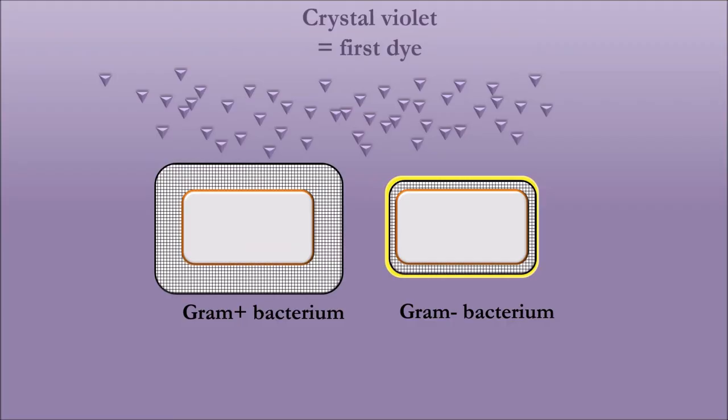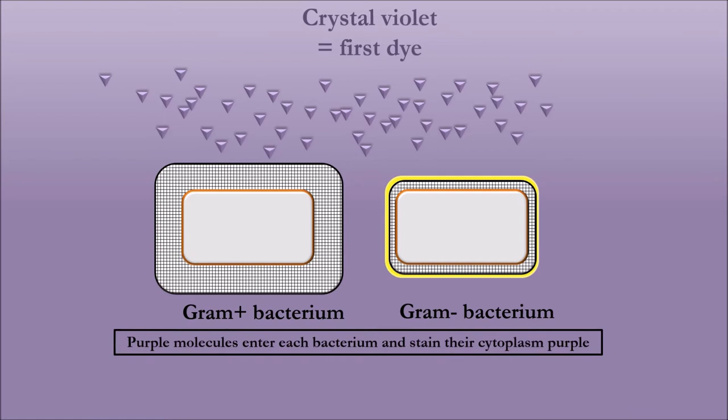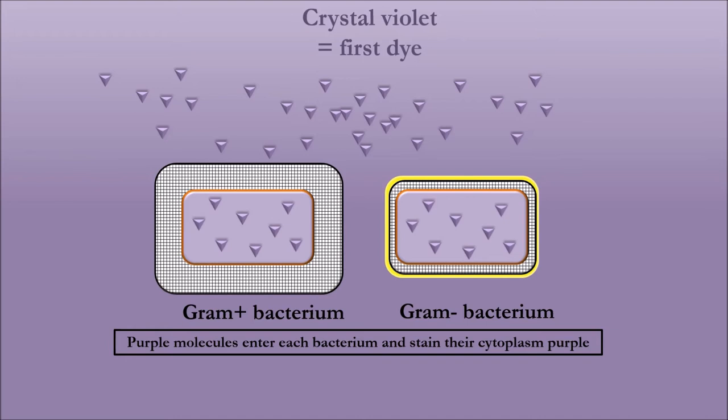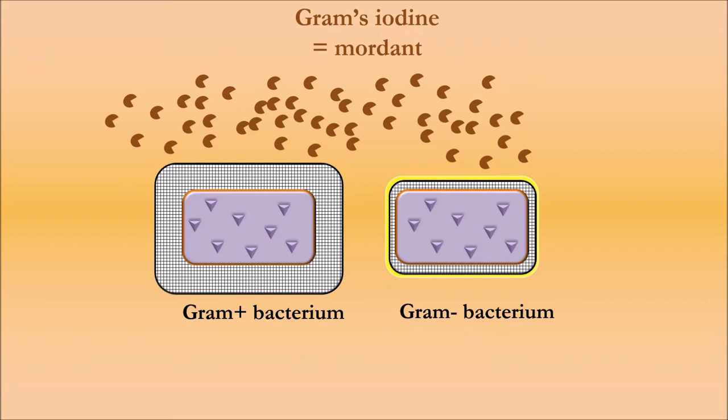The primary dye added to the dry mount is crystal violet. Purple molecules enter each bacterium and stain their cytoplasm purple. Both gram positive and gram negative bacteria are therefore purple at the end of this step. Next, Gram's iodine is added — it is called a mordant because it allows the violet molecules to be better retained in the bacteria.